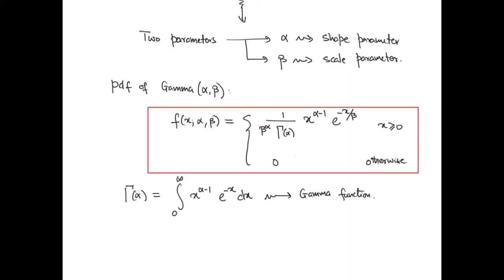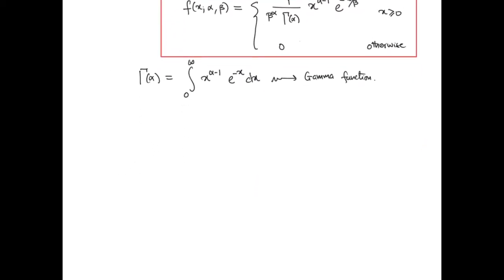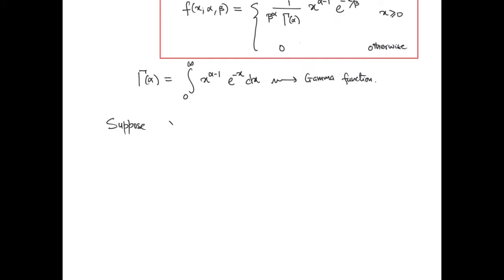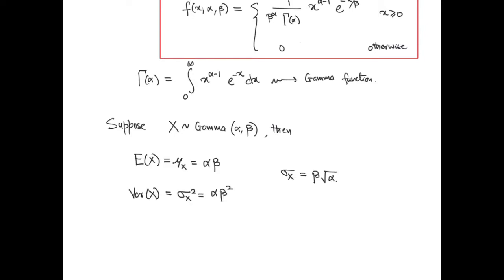The gamma function is the integral going from 0 to infinity of x to the alpha minus 1 times e to the minus x dx. Suppose X follows the gamma distribution with parameters alpha and beta. Then the expected value of X is given by alpha times beta, the variance of X is given by alpha times beta squared, and the standard deviation of X is beta times the square root of alpha.